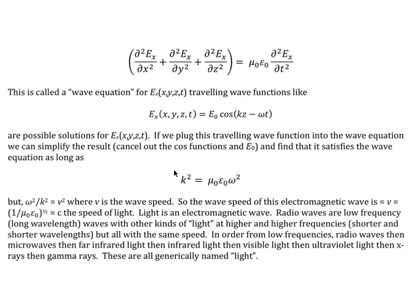cancel out E₀ on both sides, and we end up with k² equals μ₀ε₀ω². The two derivatives with respect to time bring down omega twice. Two derivatives with respect to z bring down k twice.